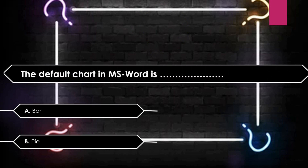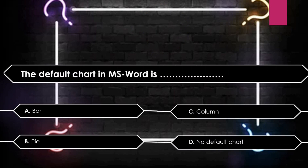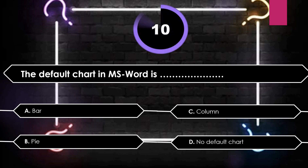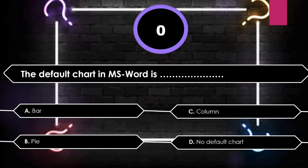The default chart in MS Word is: Bar, Pie, Column, or No default chart. The default chart in MS Word 2007 — the answer is Column.